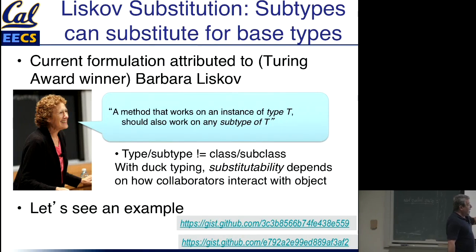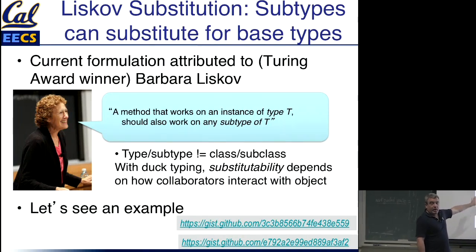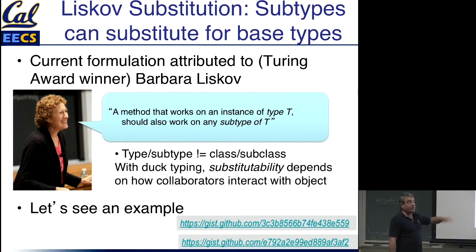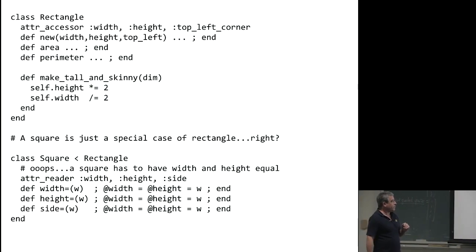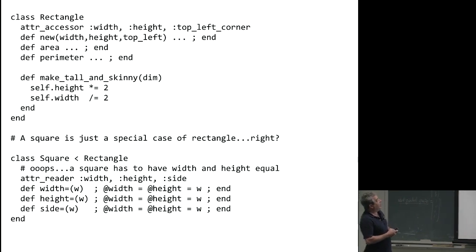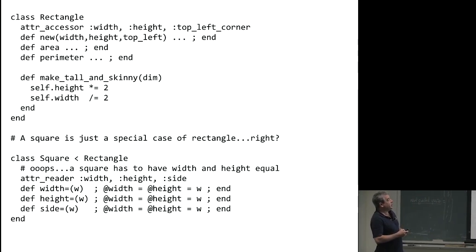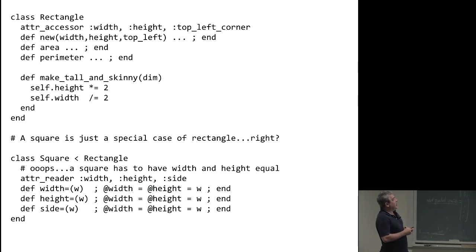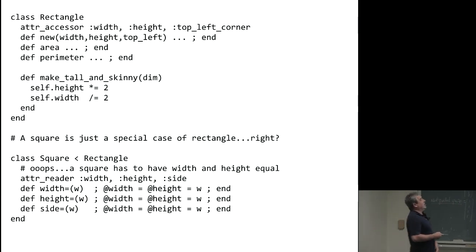I'm going to show the examples in code right on the screen, but if you want to look through the examples offline, I put them up as GitHub Gist and you can follow the links anytime. Here's a canonical example of what can go wrong with Liskov substitution. I'm simplistically assuming that I've defined a rectangle class. Rectangles have a width and a height, and a location on the screen — the top left corner. You can create a new instance, ask for its area and perimeter, or use this special function that will take a rectangle and make it tall and skinny.